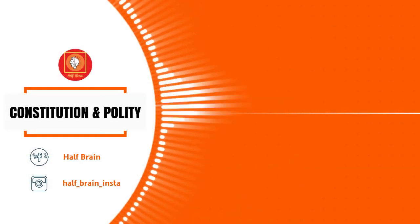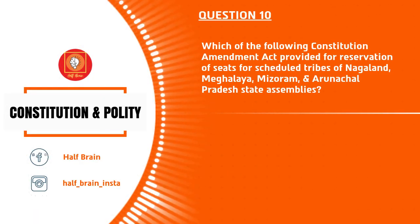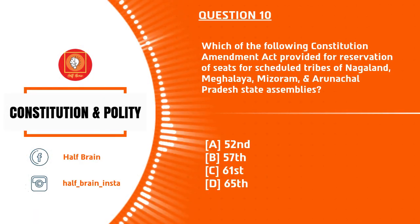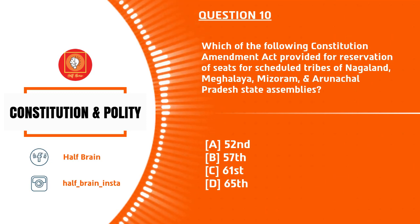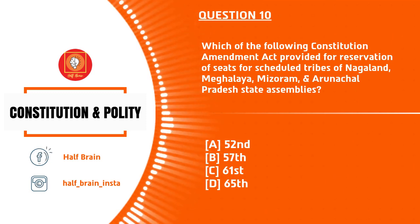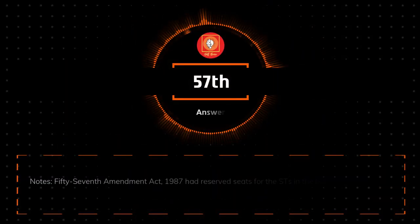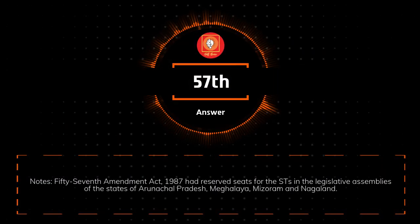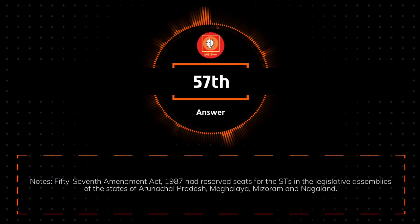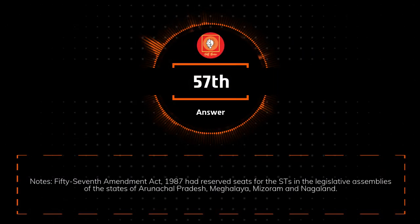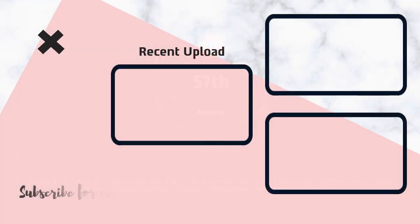Question number 10: Which constitutional amendment act provided reservations of seats for scheduled tribes in Nagaland, Mizoram, Arunachal Pradesh, and others? The answer is the 57th Amendment.